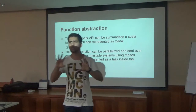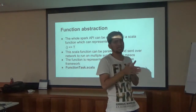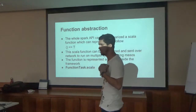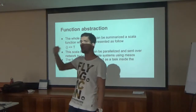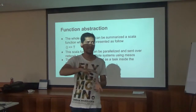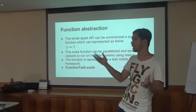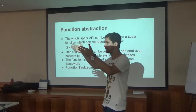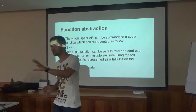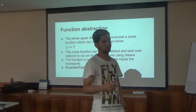When you say there are 10 tasks running in Spark, you mean there are 10 instances of that function running on 10 different machines. The abstraction layer is the Scala function. Over time, what a task is got more complicated because they added more features like accumulators. But initially, a task meant a Scala function running in a JVM.